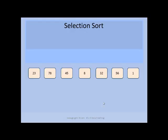Today we will discuss selection sort. In selection sort algorithm we will be given an input sequence of numbers, basically an unsorted sequence, and the output of the algorithm will be a sorted sequence of numbers. Our goal is to sort this sequence in ascending order. The basic idea is that in every iteration it will place the smallest element of the sequence at its best possible position.